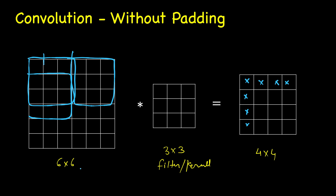In modern deep convolutional neural networks we have many many such layers. With even a small filter, the size decreases - from 6x6 to 4x4, that's already two pixels. Imagine that happening in every layer; if we have hundreds of layers, the size of the image will decrease considerably. This is one limitation: shrinking size.